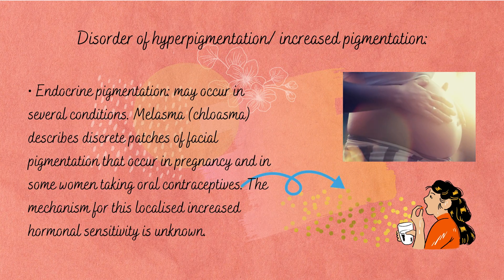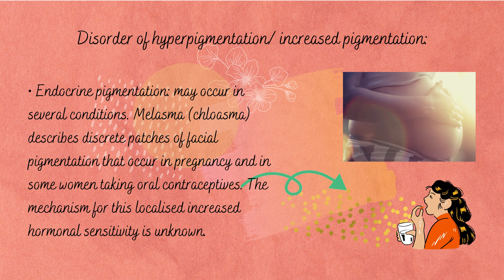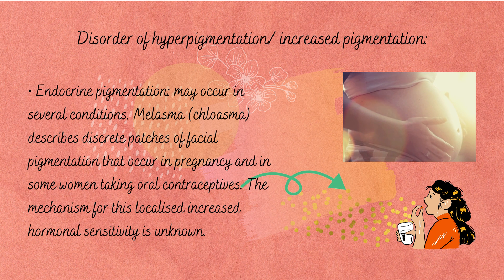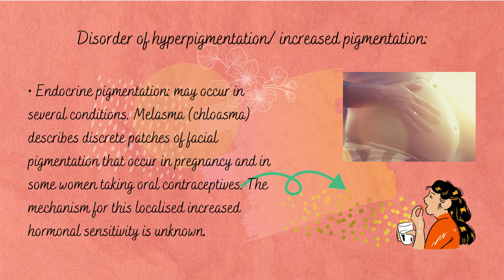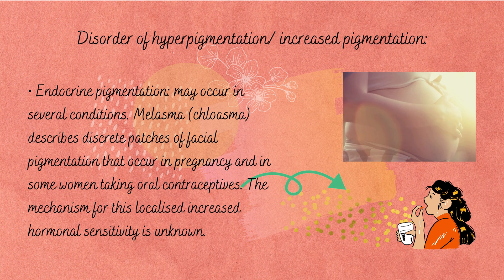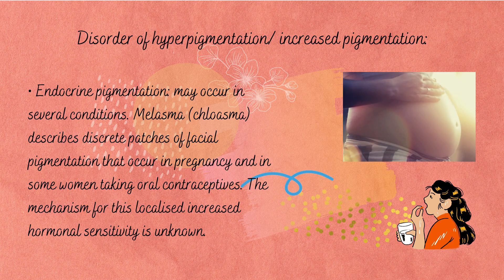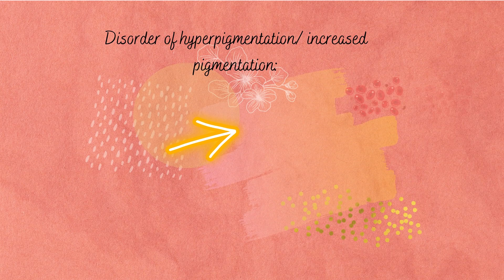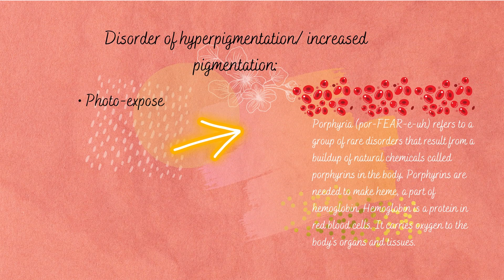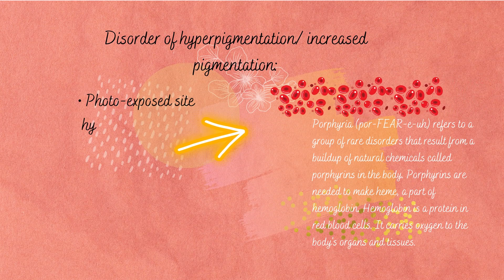Endocrine pigmentation may occur in several conditions. Melasma, or chloasma, describes discrete patches of facial pigmentation that occur in pregnancy and in some women taking oral contraceptives. The mechanism for this localized increased hormone sensitivity is unknown.